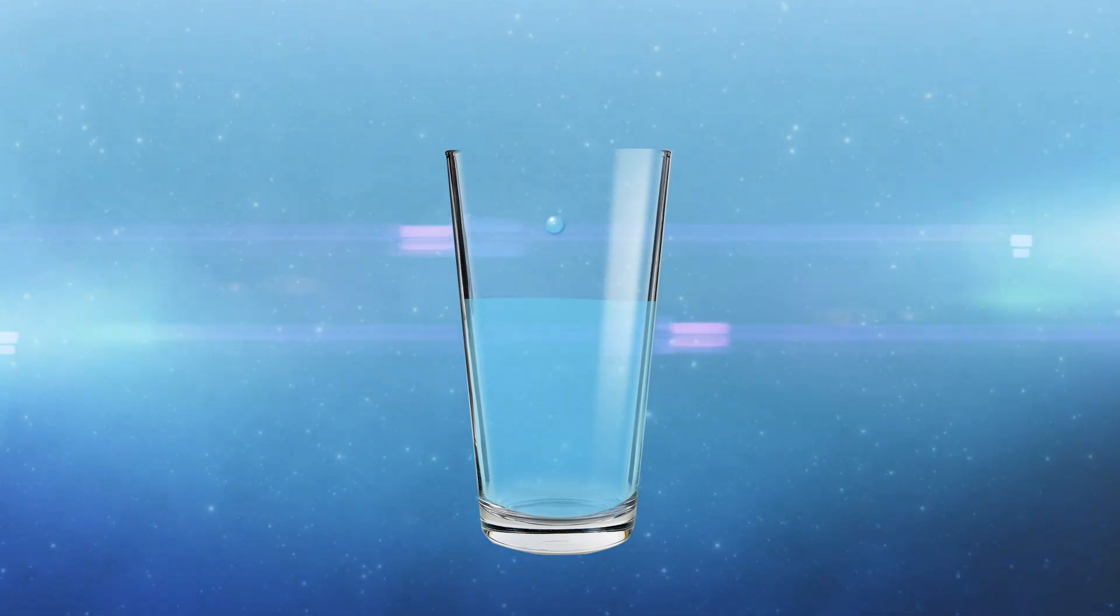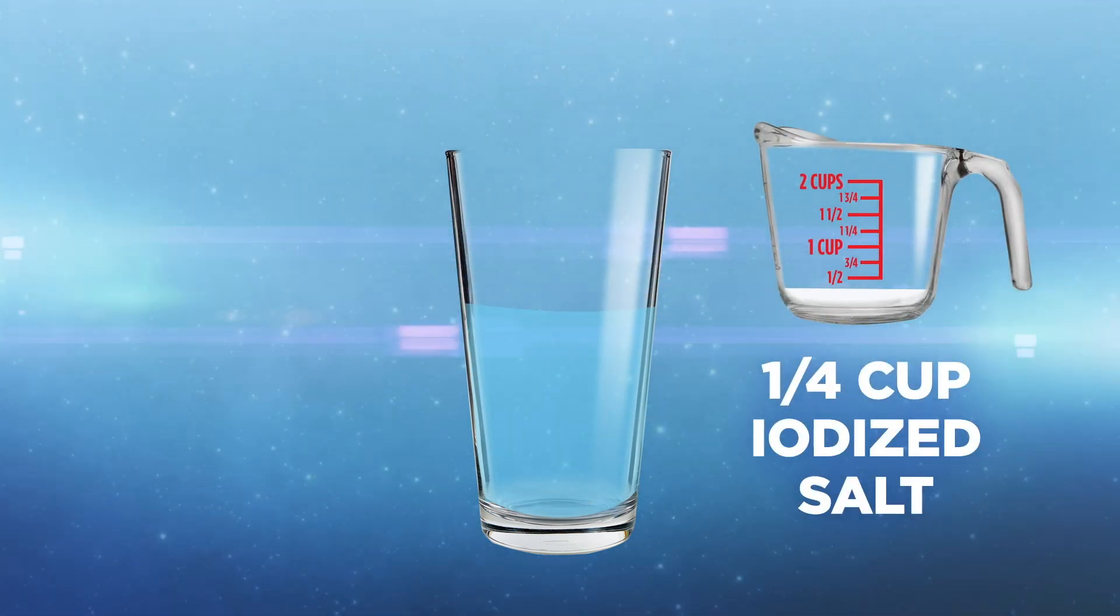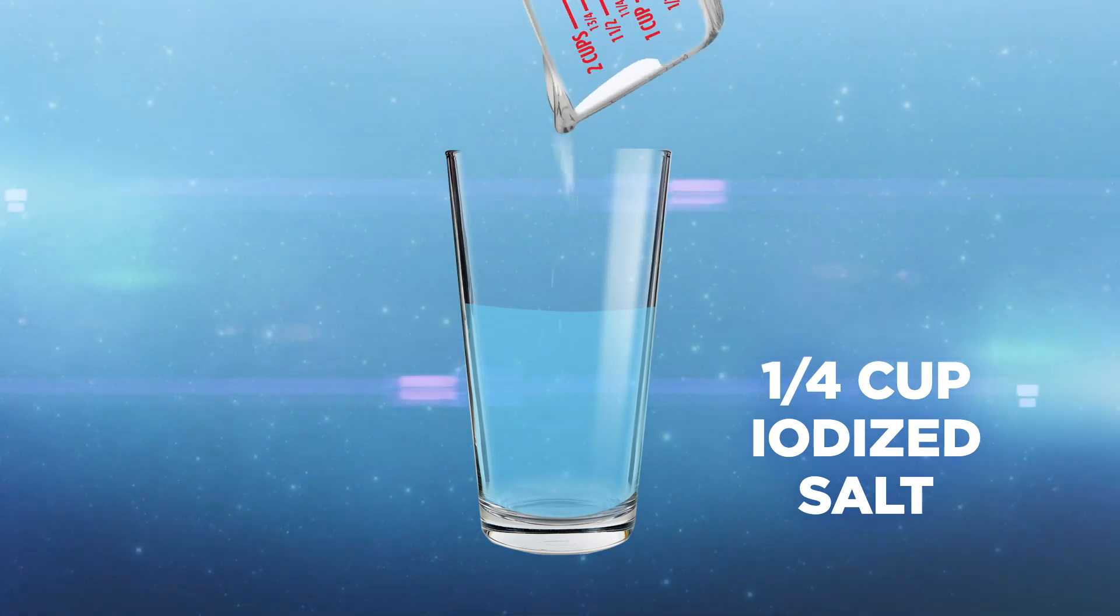Let's get started. Fill a glass halfway up with water. Now, drop an egg in. Sinks to the bottom, right? Now, take that egg out and add a quarter cup of iodized salt and mix well.